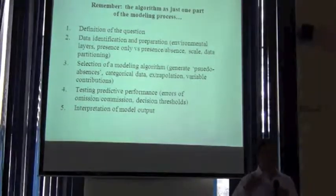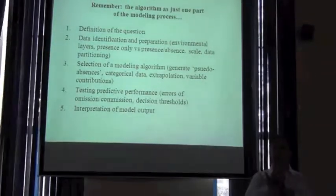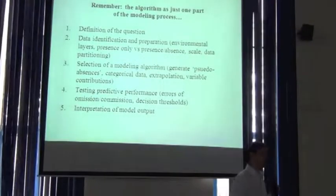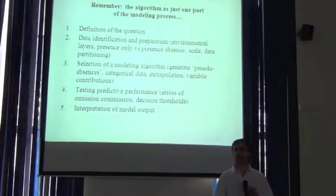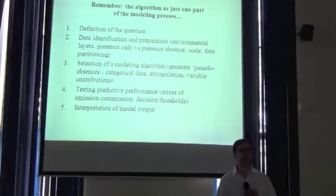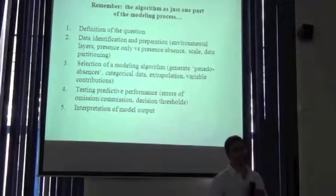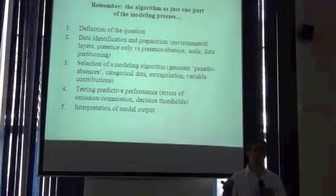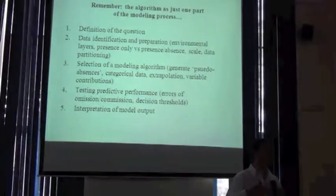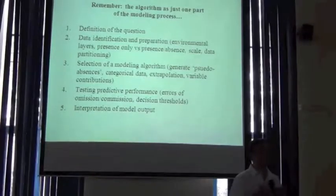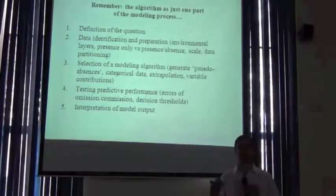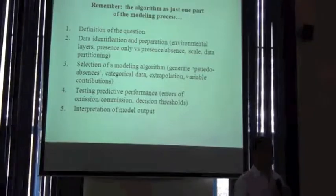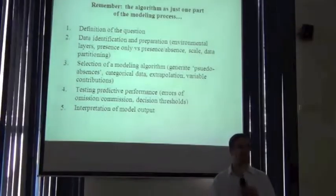Some of the very important decisions are outside the actual algorithm that you use. So when someone comes along and says, 'I'm doing some ecological niche modeling and I run Maxent models or I run bioclim models' — well, that's great, but that's just one relatively small part of a bigger story. How have you selected your data? How have you made decisions about what the background area is? Are you dealing with bias? How are you dealing with bias?